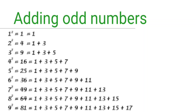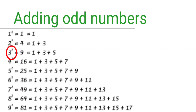Now observe another pattern. 1² = 1, 2² = 4 = 1 + 3, 3² = 9 = 1 + 3 + 5. These are sums of consecutive odd numbers. So 1 + 3 = 4, which is 2 squared. And 1 + 3 + 5 = 9, which is 3 squared. Similarly, 1 + 3 + 5 + 7 = 16, which is 4 squared.